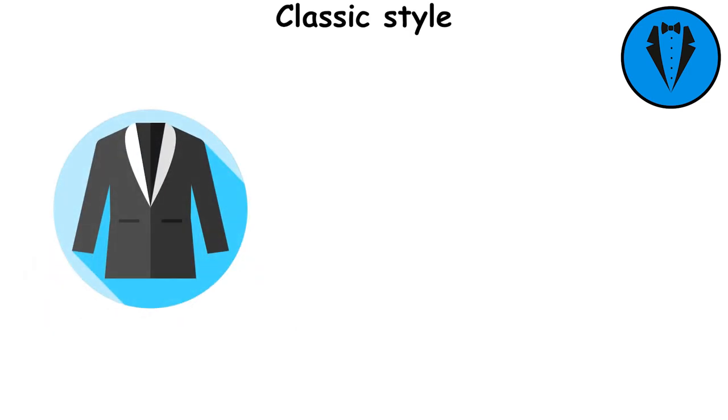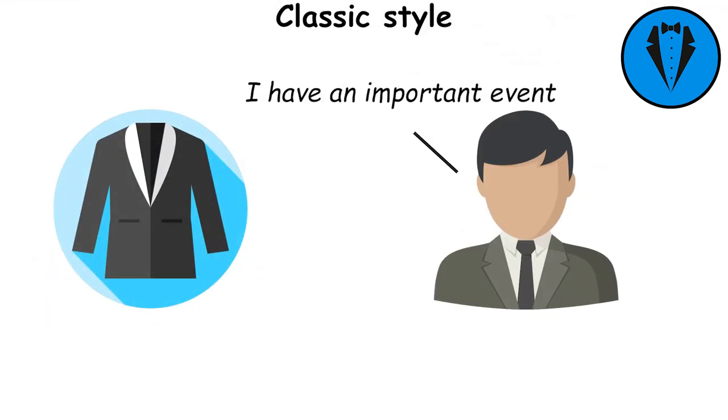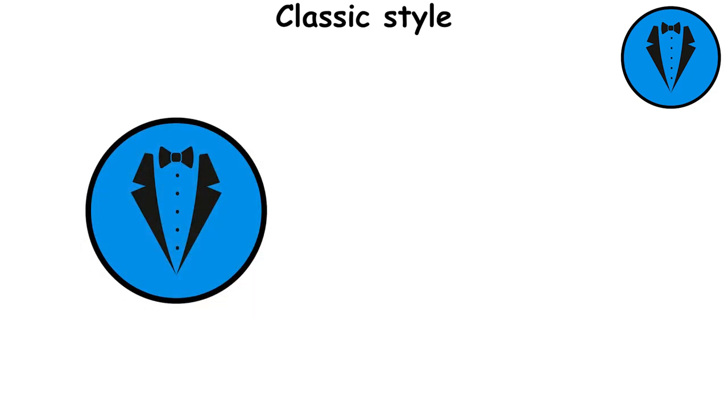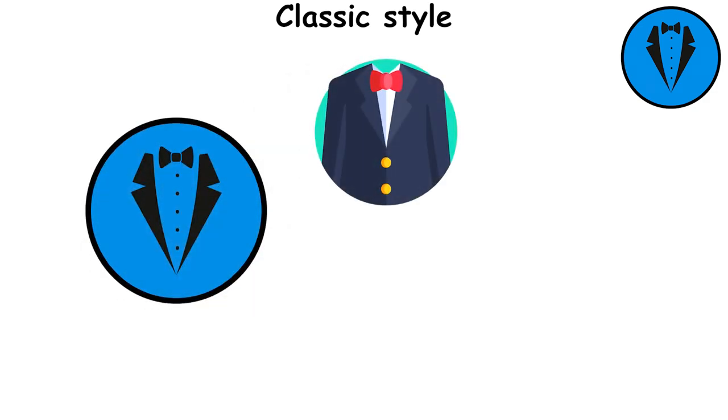Classic style is not just about the clothes you wear, but also about the message you send with your clothes. Classic style is often associated with clothing items such as suits, dress shirts, and ties, but it can also include more casual items like chinos and polo shirts.